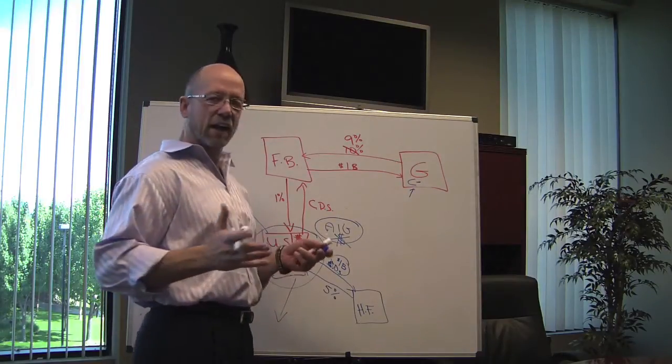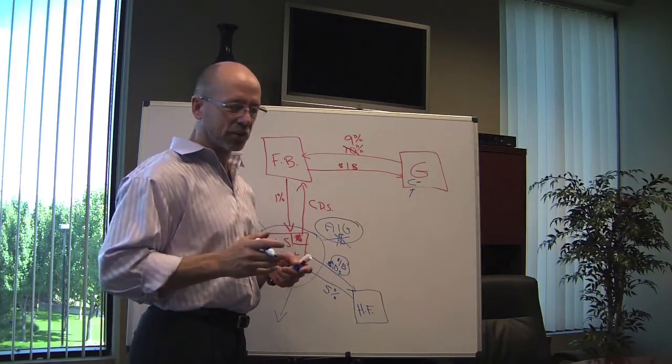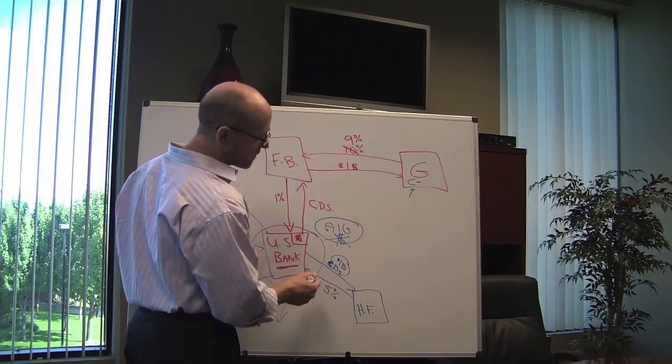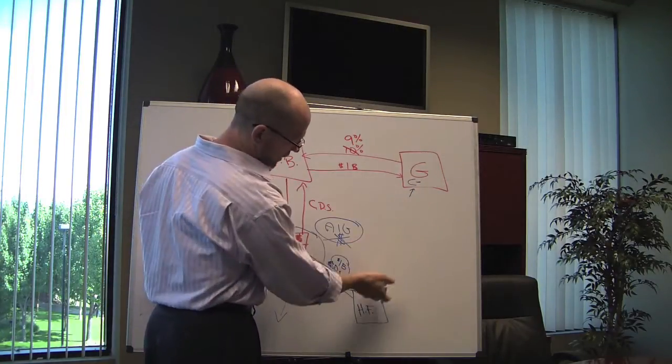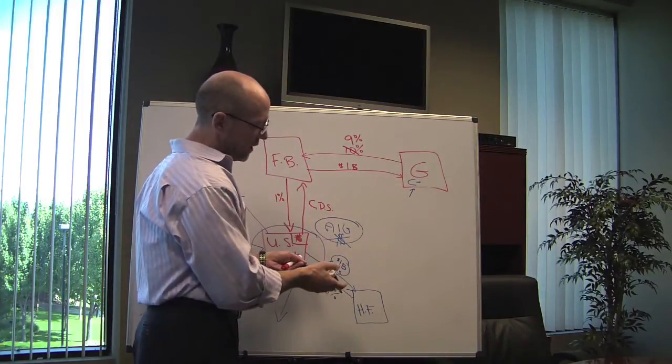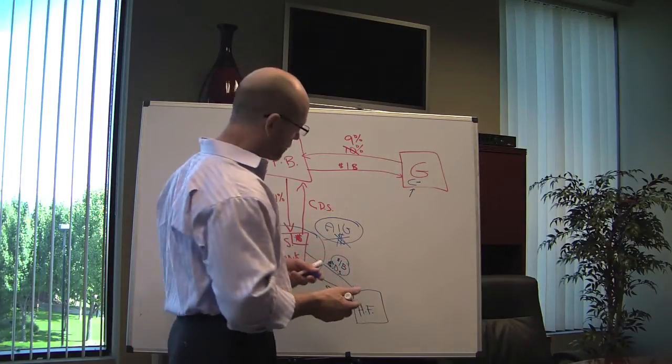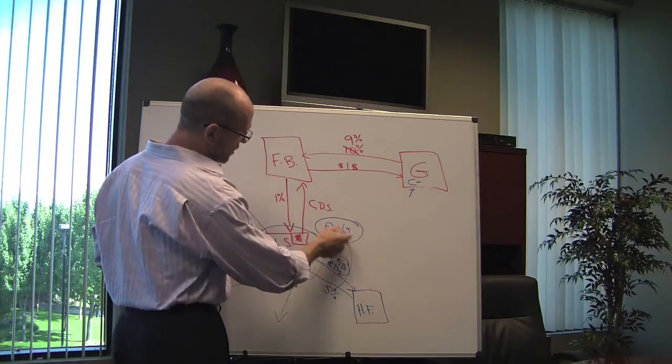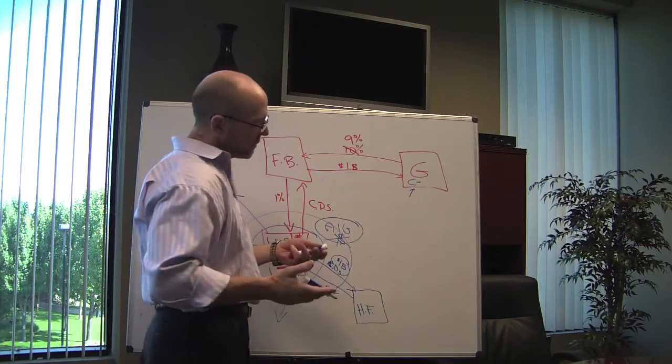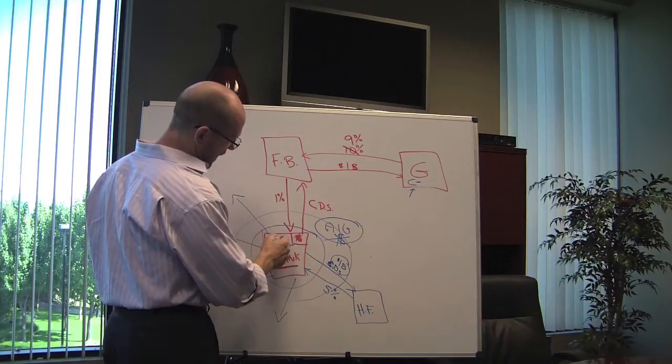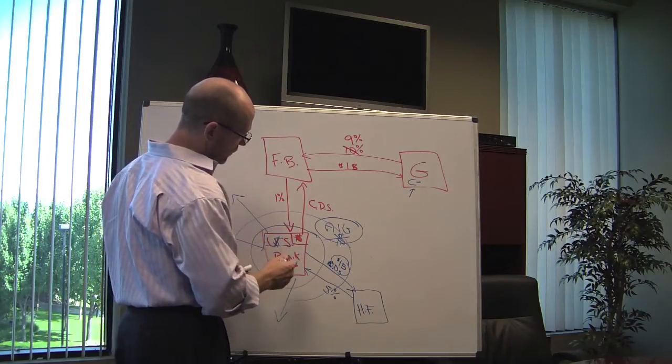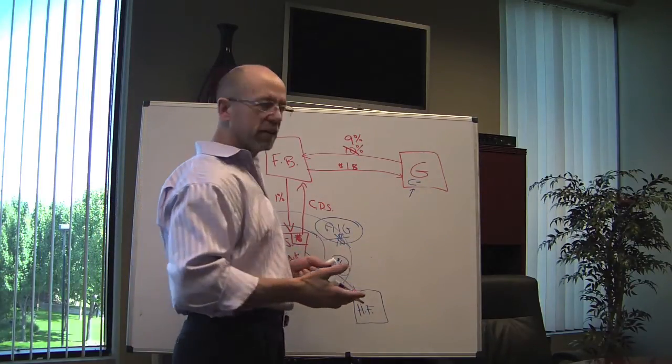So what do we get now? We get regulations. There's talk of outlawing, by the way this is called a naked default swap because there's no relationship between here and here. Let's outlaw naked default swaps. Let's create an exchange, perhaps, where CDSs are traded. Maybe that's not such a bad thing. Let's require banks to have capital with which to back the credit default swaps.